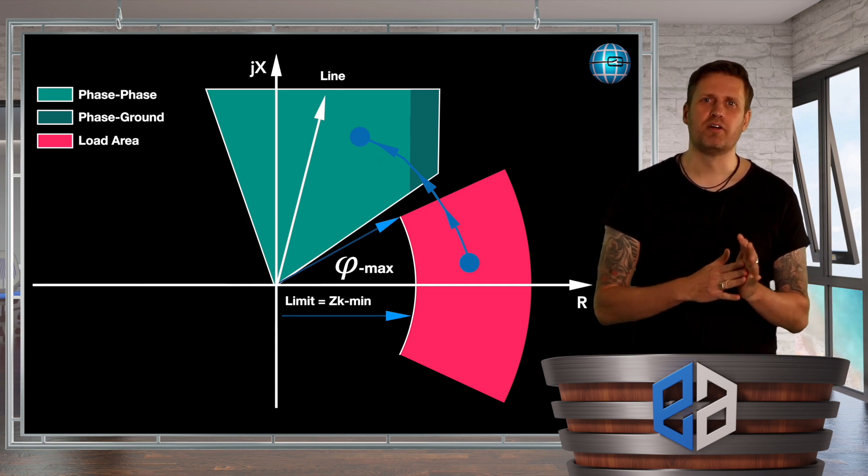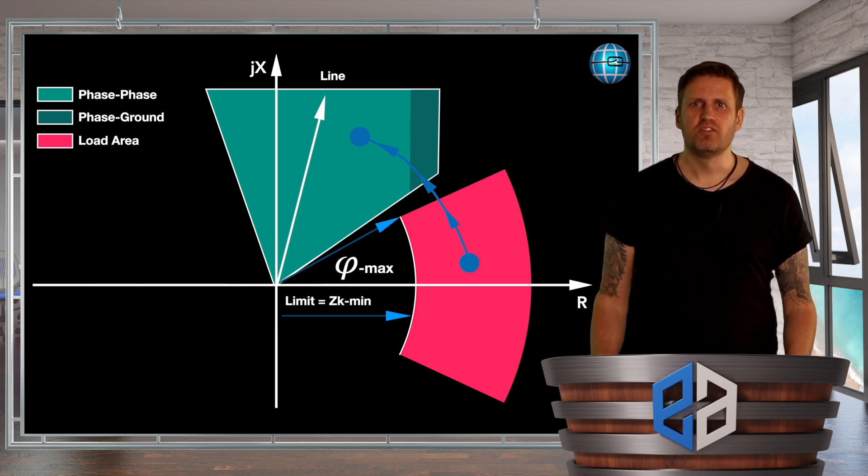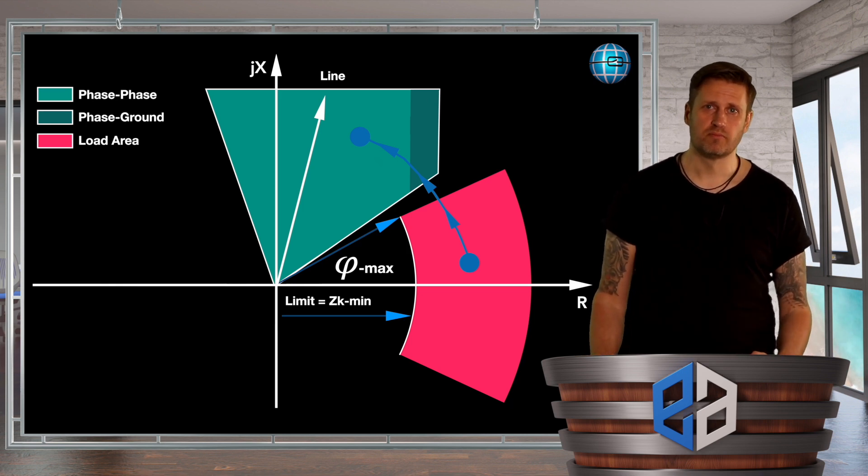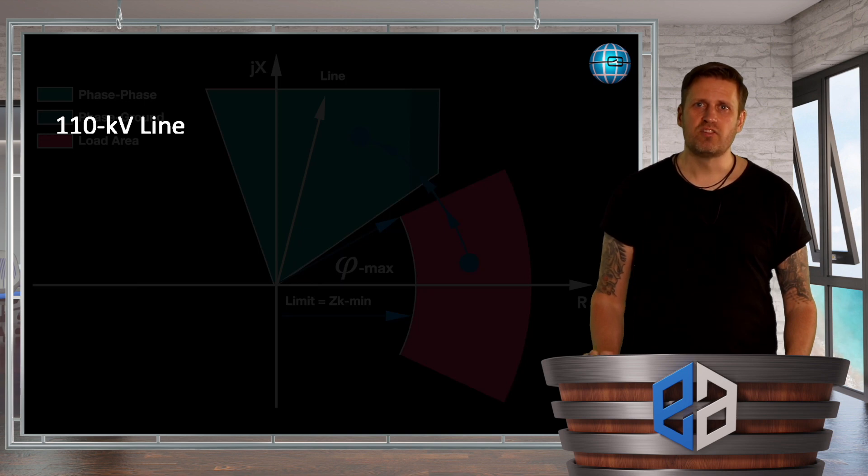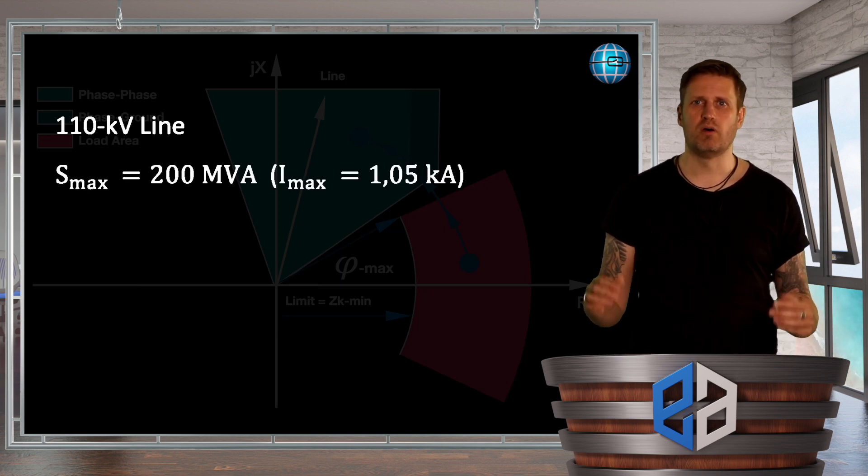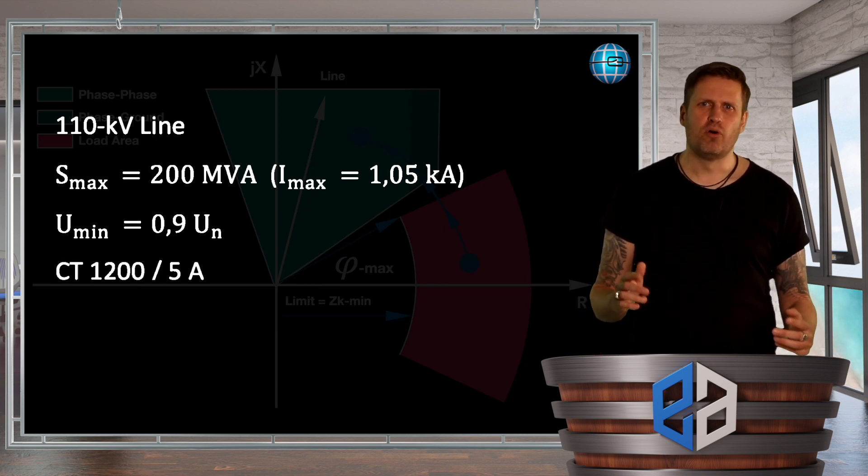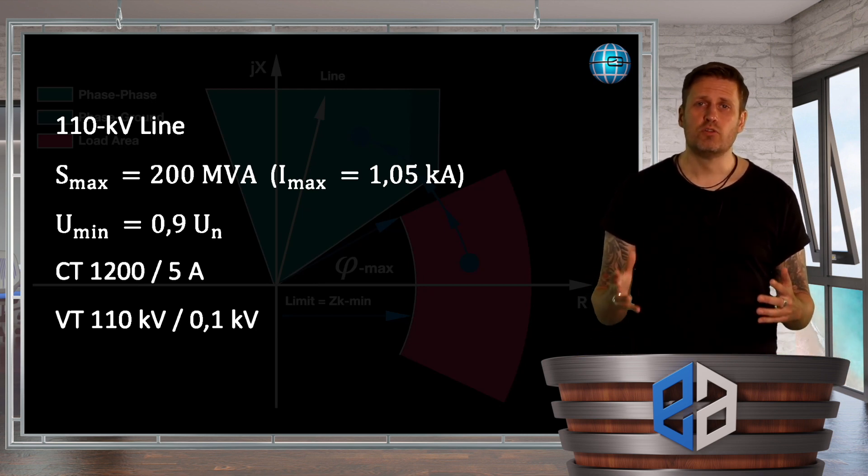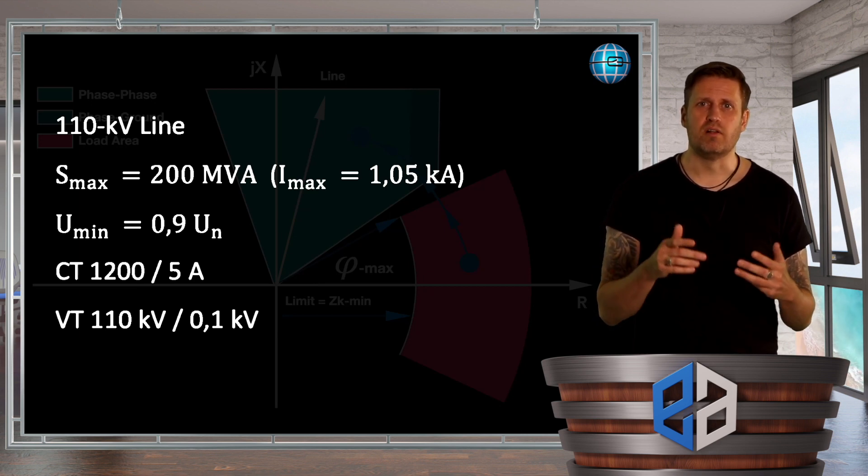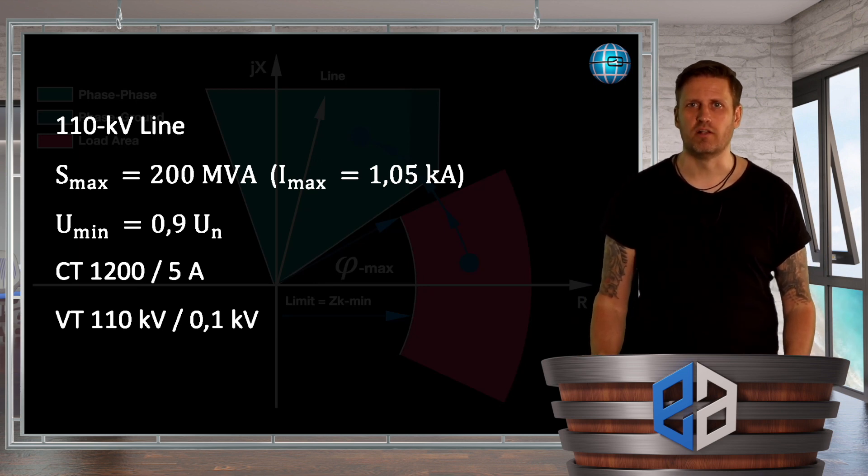How can we now calculate the two parameters to determine the amount and the angle for the load section? Well, let's do an example. Let's assume that we have the following primary system. We got the 110 kV overhead line with a cross-section of 300. The maximum apparent power that can be transmitted should be about 200 MVA and the minimum operating voltage is 90% of the nominal voltage. We have a 1.2 kA to 5A CT ratio and our voltage transformer has a ratio from 110 kV to 100 V. All we have to do now is to calculate the smallest load impedance and the largest load impedance angle, add a small safety factor to each and convert the results to the secondary side.